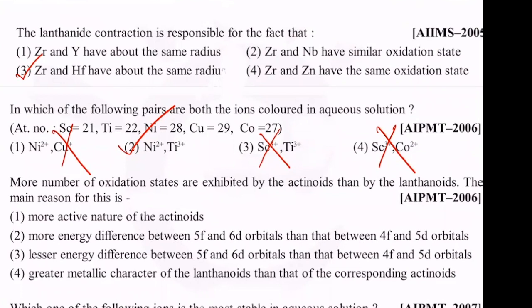The difference between 5F and 6D orbitals is small. There is less energy difference between 5F and 6D orbitals. Because of that, electrons can be promoted more easily, allowing more oxidation states. We have to learn the concept using electronic configuration.